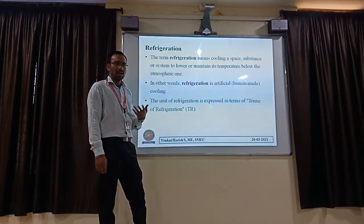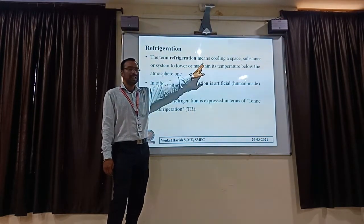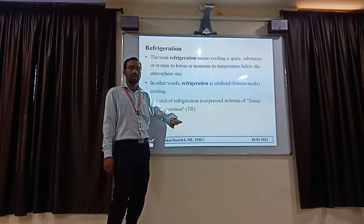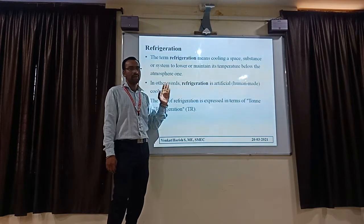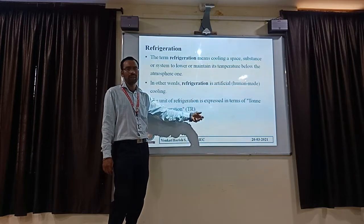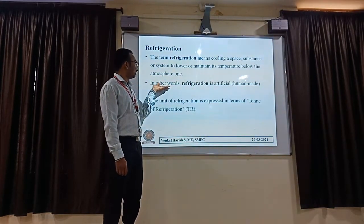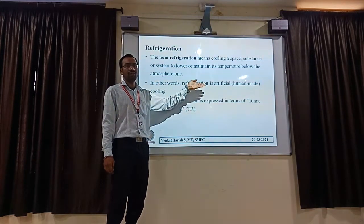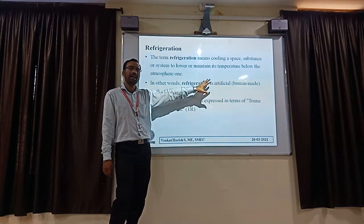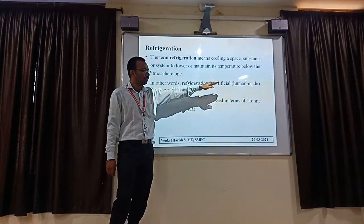Refrigeration means it is a cooling space, or we should maintain the temperature below compared to outside temperature. How we have to maintain lower temperature? By using different components with respect to their working principles — that we will see by diagram. In other words, refrigeration we also call it as artificial cooling, because we are doing the cooling process. It is not done by air naturally; it is done artificially by humans.